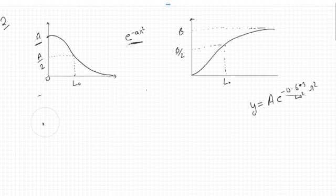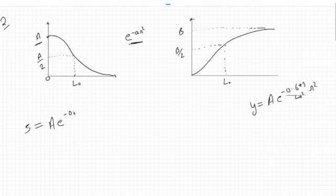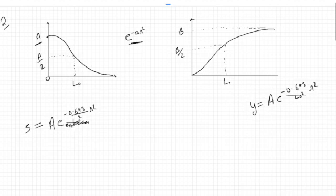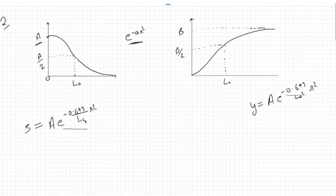So this is how it is. Our final function — using s and r notation — is: s = A · e^(-(0.693 / l₀²) · r²). That's the transformation function for the first figure.